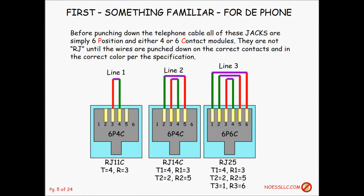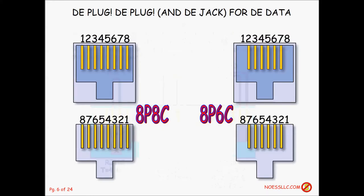Everybody in the LAN world is using eight-pin modulars. Before you put any wires on them, they're an 8P8C — simple as that. Or if you can find one, an 8P6C. That's what they are. They're not RJ45, they're not RJ anything. They're an 8P8C.